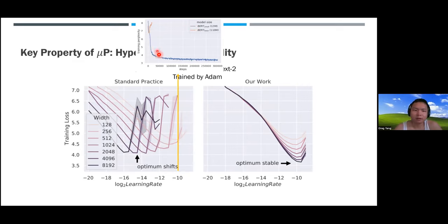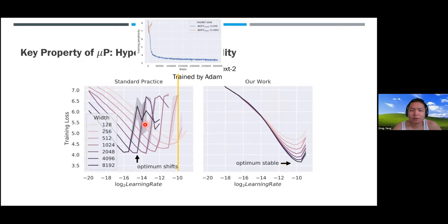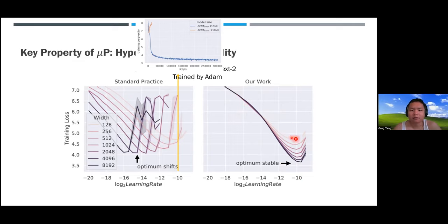With MuP, in contrast to standard parameterization, all the curves fit together very nicely. The optimal learning rate is stable, and the curves don't intersect, so you always gain something when you increase the width of the model.